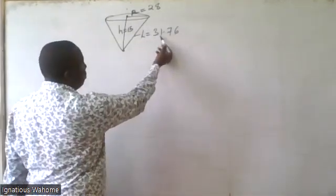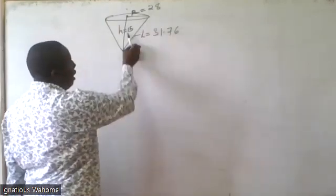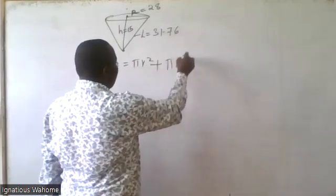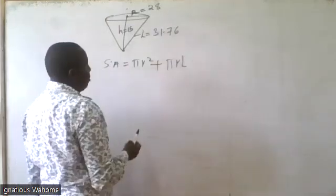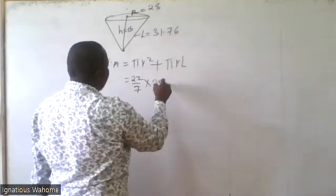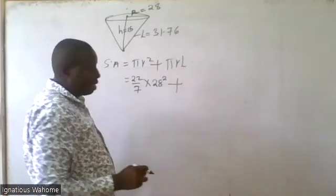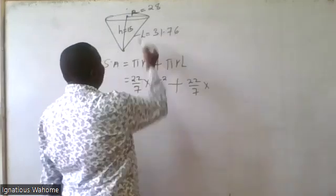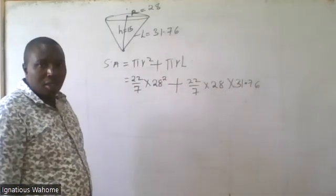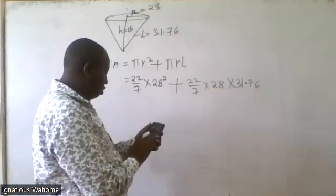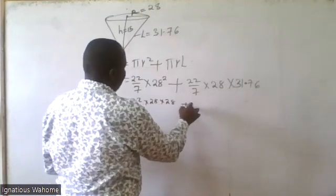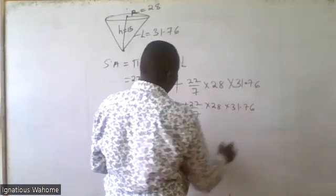So the slant height L is 31.76, the radius is 28, and the height is 15. Now, taking pi as 22 over 7, the surface area equals pi r squared plus pi r L. That's 22 over 7 times 28 squared plus 22 over 7 times 28 times 31.76. For the base area: 22 over 7 times 28 times 28 gives 2464.